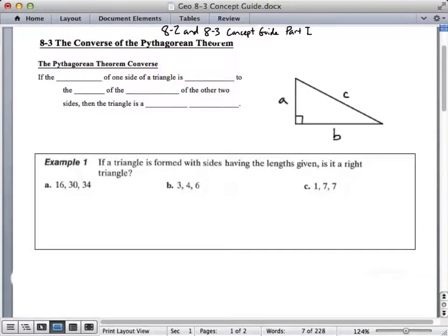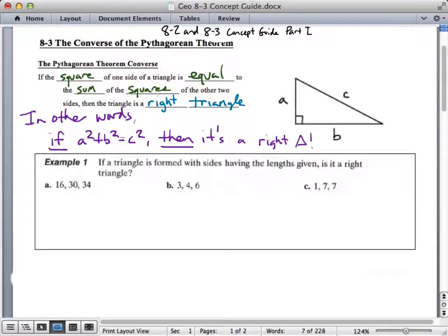Now, section 8-3 is actually called the converse of the Pythagorean theorem. So it's the opposite way around. So if the square of one side of the triangle is equal to the sum of the squares of the other two sides, then the triangle is a right triangle. So in other words, if A squared plus B squared equals C squared, then you know it's a right triangle. So now the question becomes, is this a right triangle or not? Look at example 1.